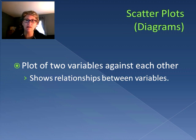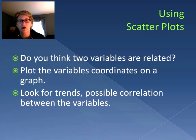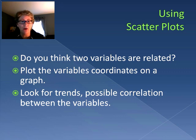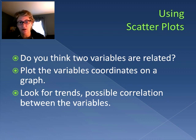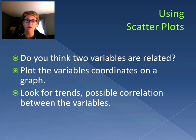To use a scatter plot, we're asking whether two variables are related. We plot those variable coordinates on a graph and then look for trends and possible correlation between those variables. Let's see what a couple of these plots look like.